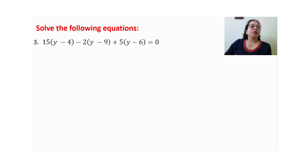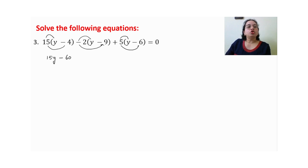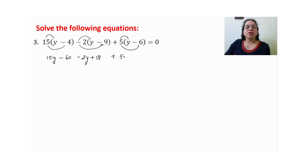थोड़ा सा और complicated equation है। सबसे पहले distributive property का use करेंगे — minus sign bracket के बाहर है, तो ध्यान से solve करिए। So: 15y minus 60, and the bracket with minus sign outside changes all inner signs: 2y becomes minus 2y, and 2 into 9 = 18 becomes plus 18, and 5y minus 30 is equal to 0.